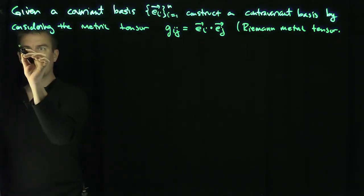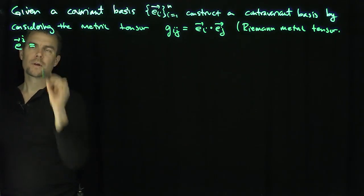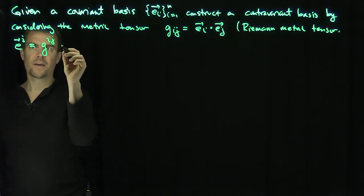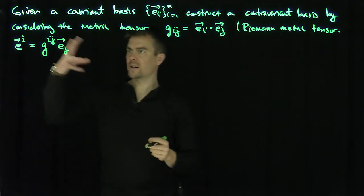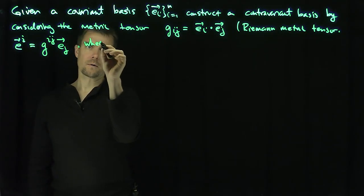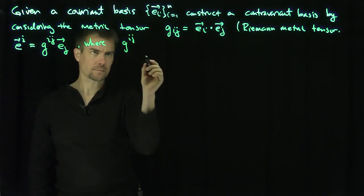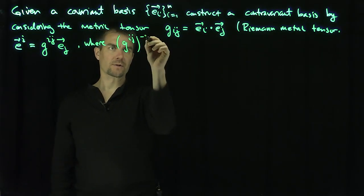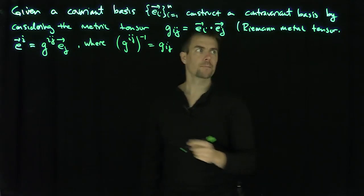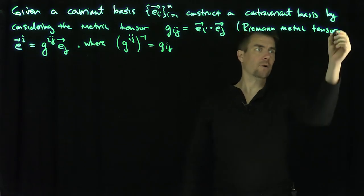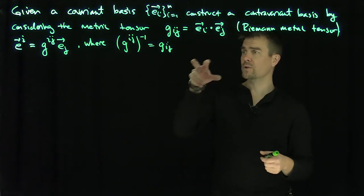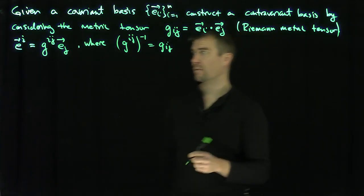I can construct e^i upper: it's going to be g^ij upper times e_j lower. In other words, I can raise the index by multiplying by the inverse of the matrix. So g^ij upper, viewed as a matrix, is the inverse of g_ij lower — the inverse of the original metric tensor. I know it is positive definite, all eigenvalues are nonzero, it's not degenerate, and the Gram matrix is invertible.